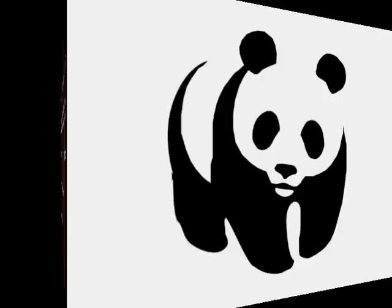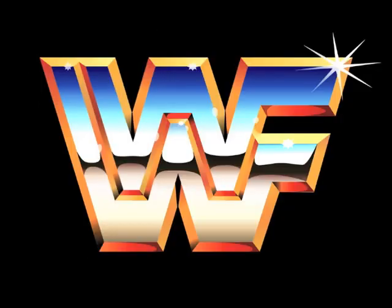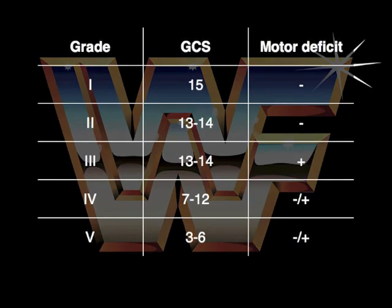The WFNS — not to be confused with WWF — which was also from Kirker in 1988, should now be considered the standardized clinical score. It stands for the World Federation of Neurosurgical Societies. It's more objective than Hunt and Hess, but it is reliant on getting the GCS right.